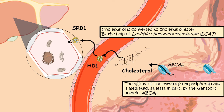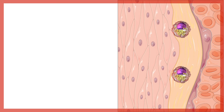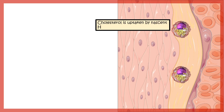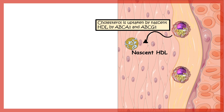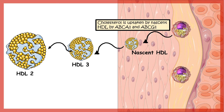Foam cells are a rich source of cholesterol and deposit it in the arterial space. Cholesterol is taken up by the nascent HDL particle via ABCA1 and ABCG1 receptors. As nascent HDL takes up more and more cholesterol, it grows larger, forming HDL3 particles. Eventually HDL3, carrying more cholesterol and triglyceride, becomes HDL2, which is returned to the liver and recycled back to nascent HDL.